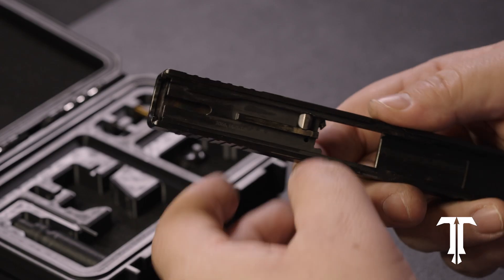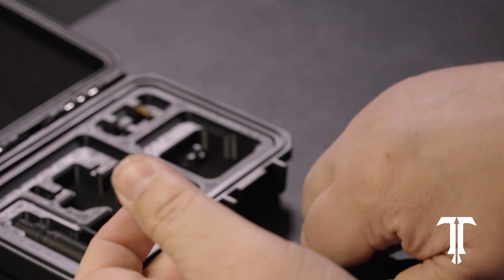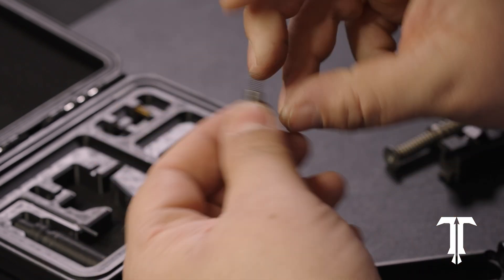Dismount the barrel. Now, you can depress the plunger slightly, drop out the extractor, and the plunger will just come straight out.